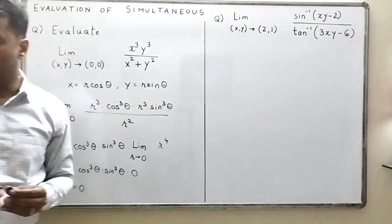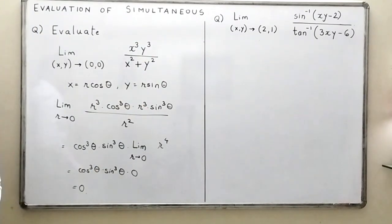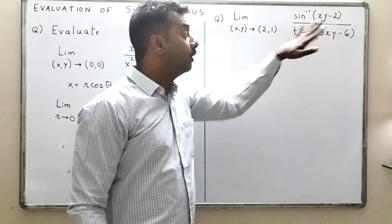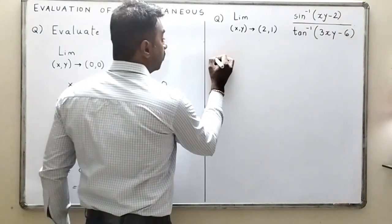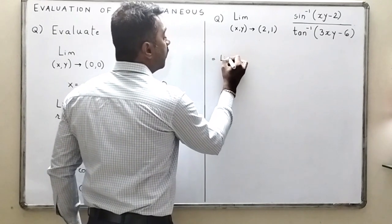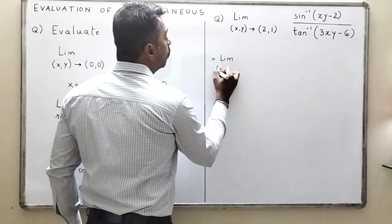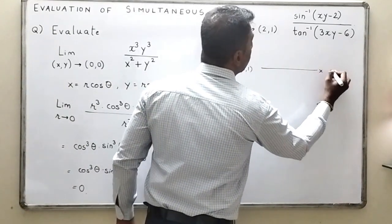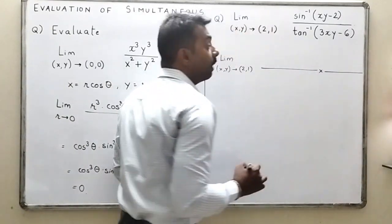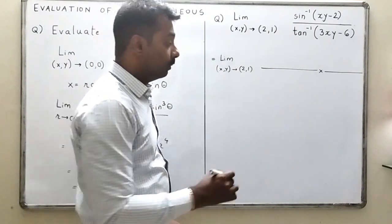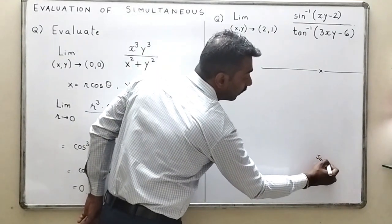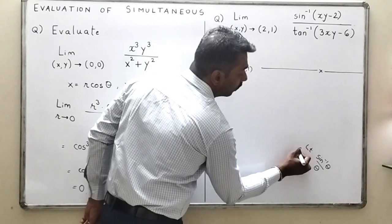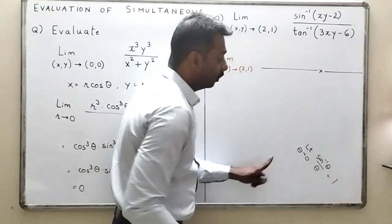The next problem does not have x² + y², so we use a different approach with standard limit rules. We evaluate the limit as (x,y) → (2,1). We recall that the limit of sin⁻¹(θ)/θ as θ → 0 equals 1, and similarly the limit of tan⁻¹(θ)/θ as θ → 0 also equals 1.